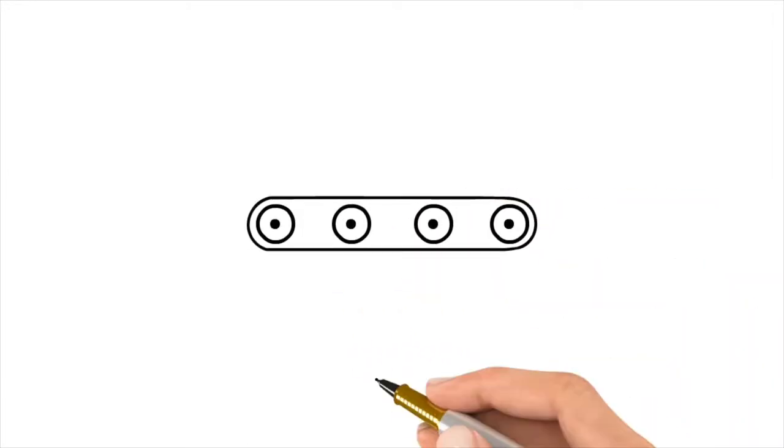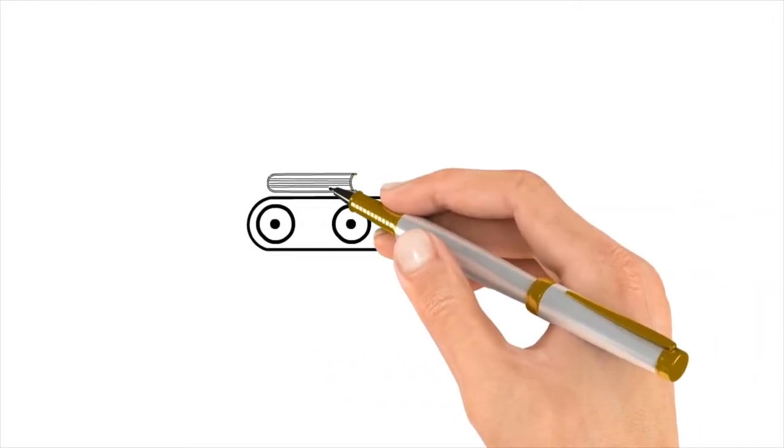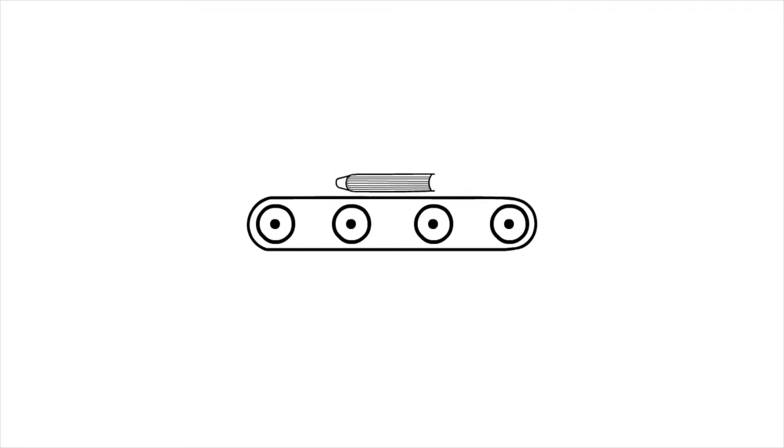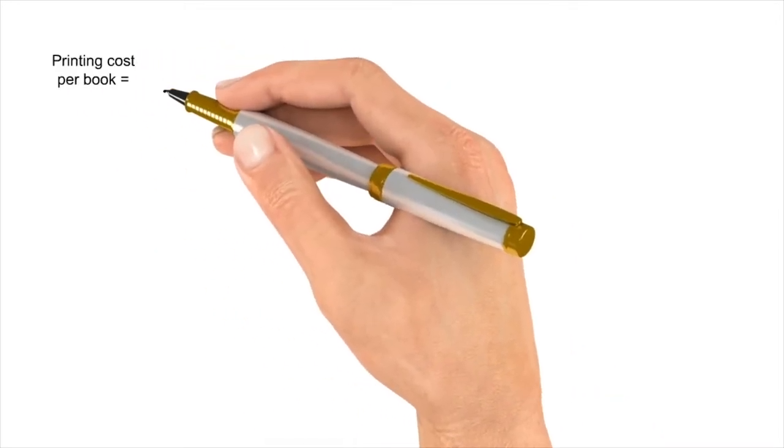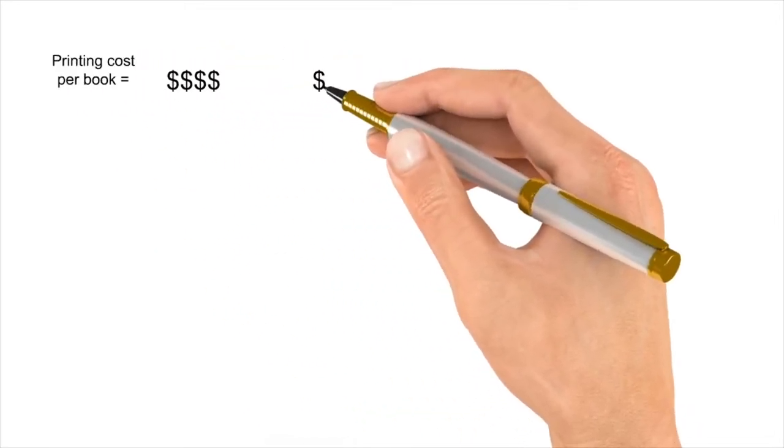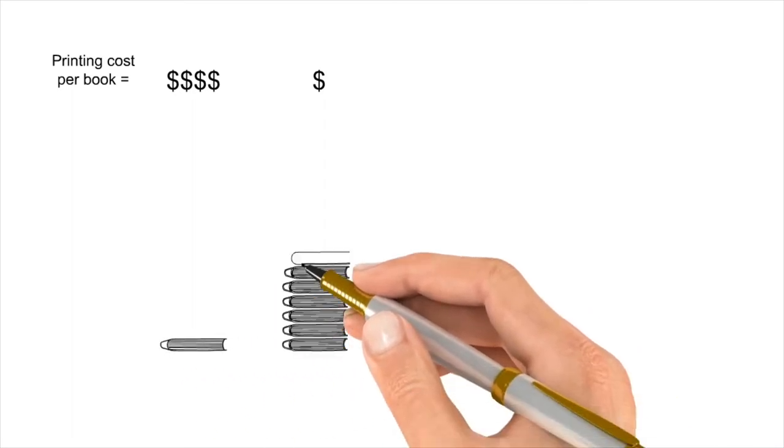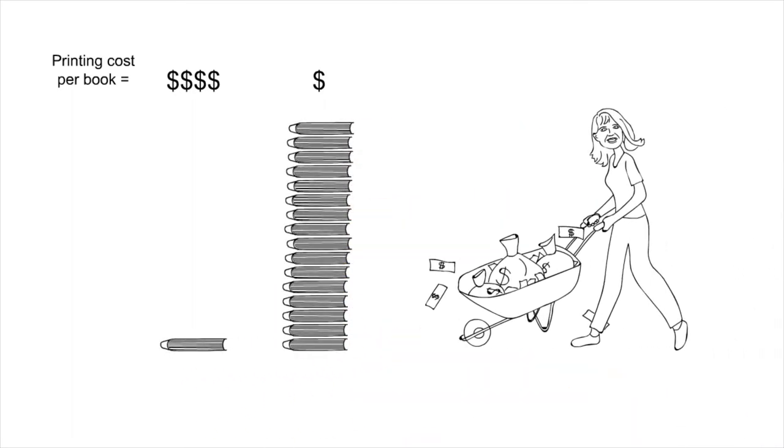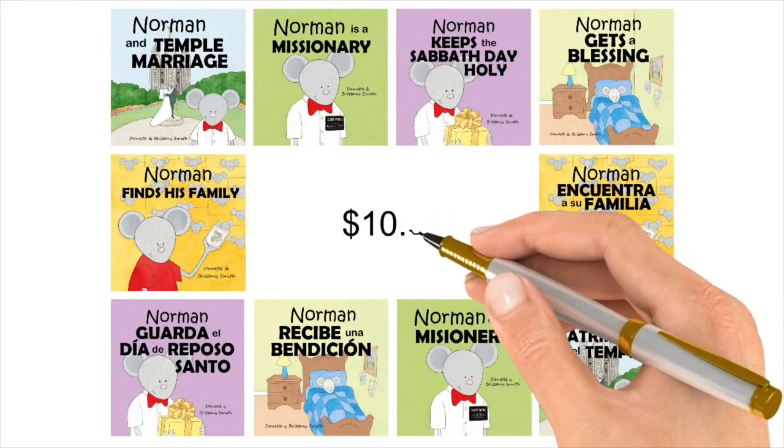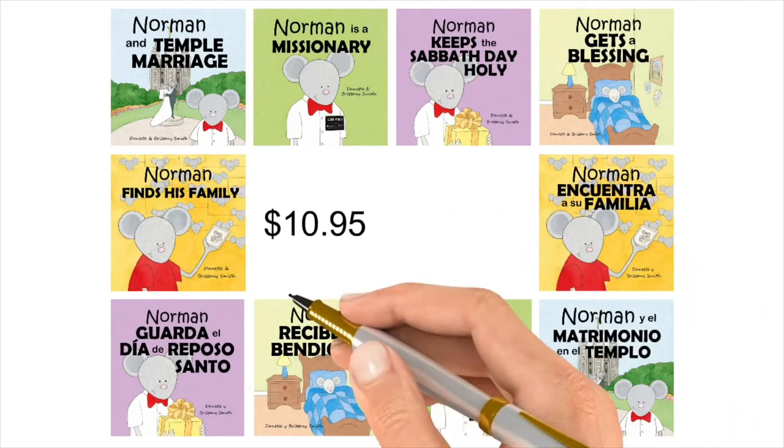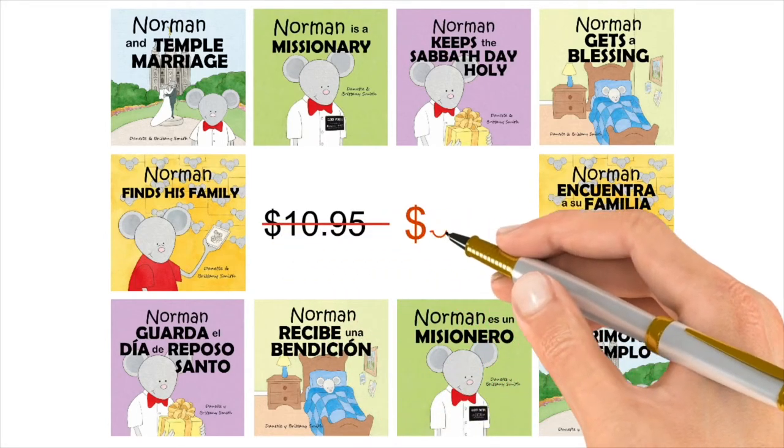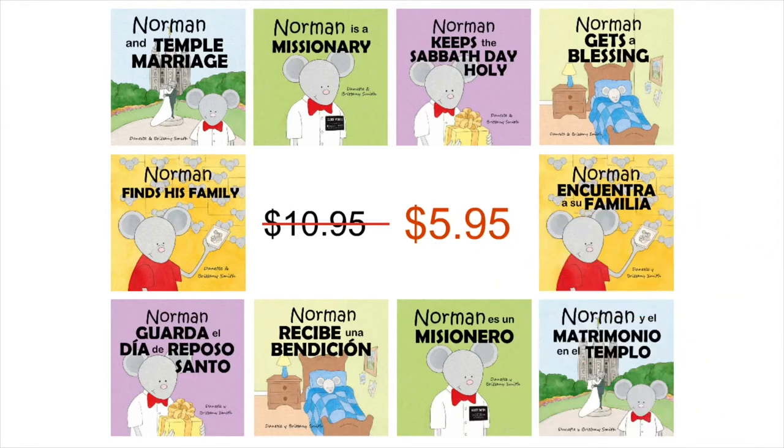The books you purchase now are printed individually right after you purchase them. In order to lower the price of each book, we will have to order thousands of copies and pay for them all up front. Currently, every Norman book sells for $10.95, but if this campaign is successful, we will be able to sell each book for almost half that.